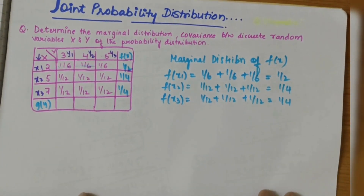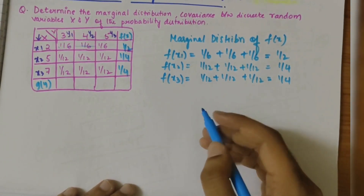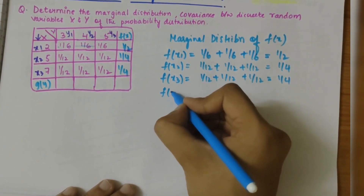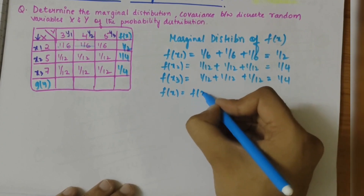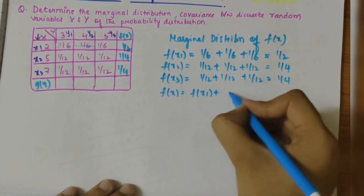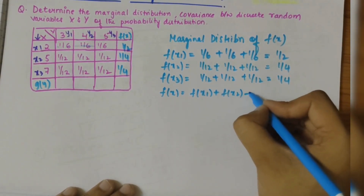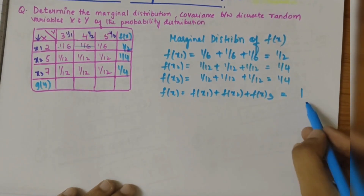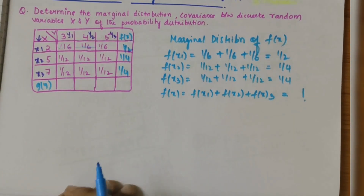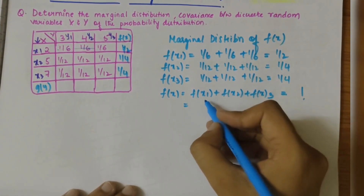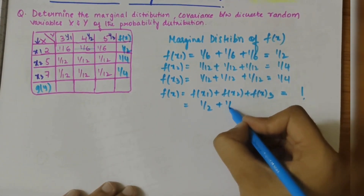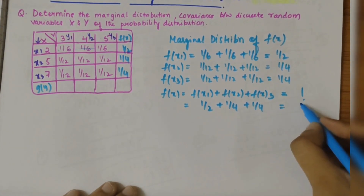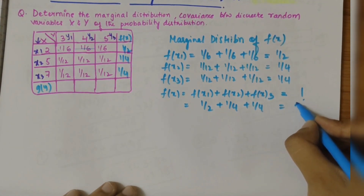One more thing to remember: the sum of all f(x), that is f(x1) + f(x2) + f(x3), should be equal to 1. If it equals 1, then all the values we have obtained are correct. So let's check: 1/2 + 1/4 + 1/4 = 1. Yes, it's correct.